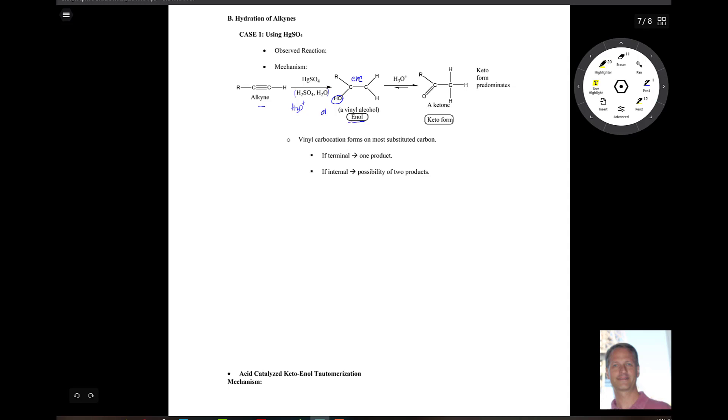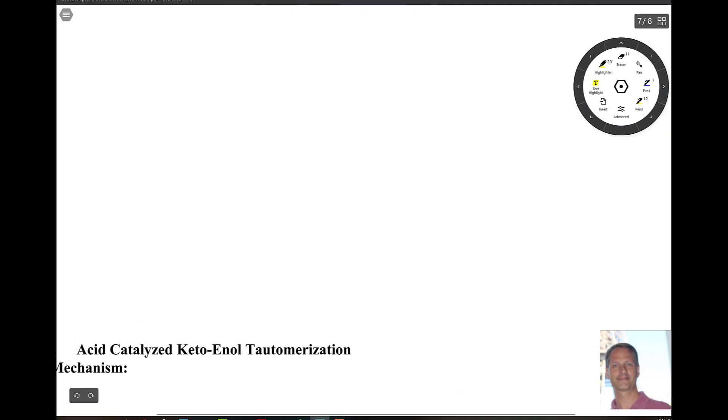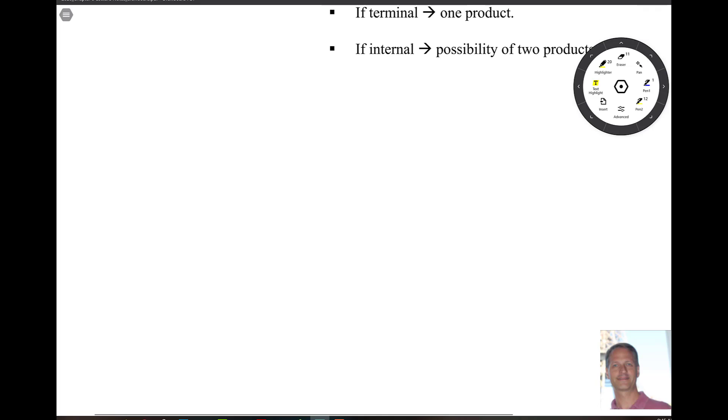So let's take a look at the mechanism here. Let's zoom in a little. All right, so let's start off with a terminal alkyne. So we're going to have an RC triple bond CH.